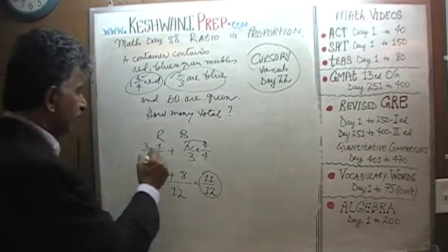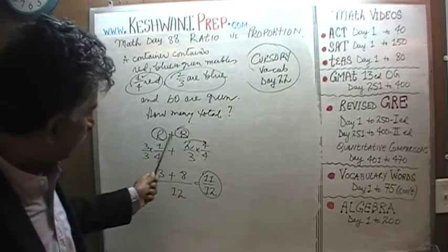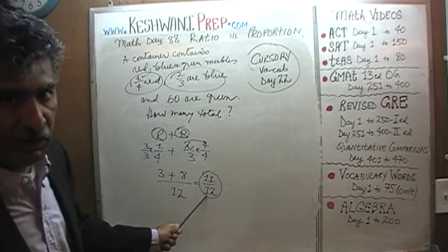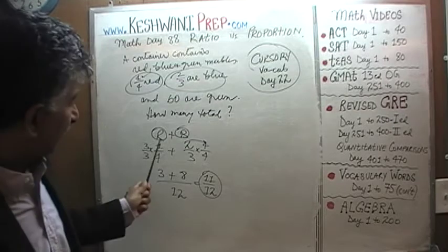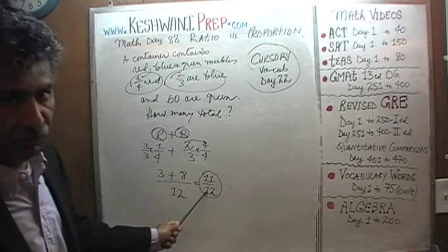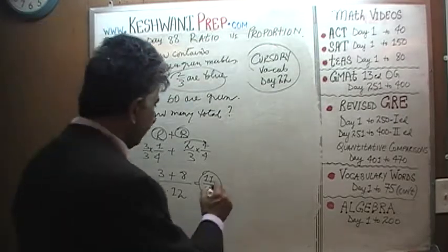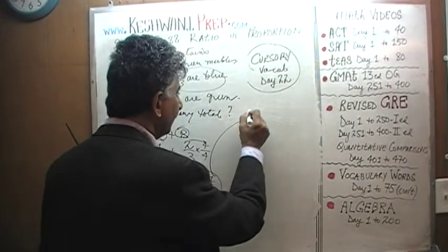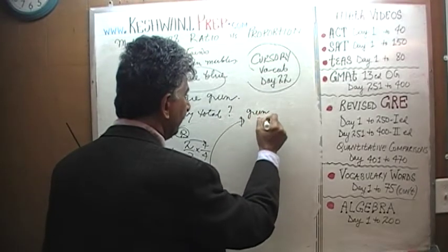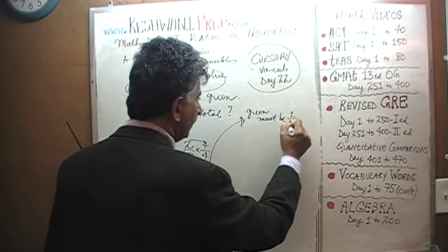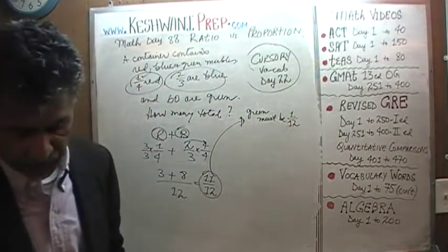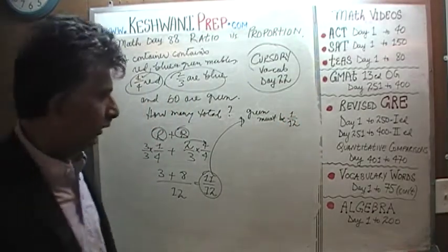Which means the red and the blue, red and the blue together constitute eleven-twelfth of the bag. The red and the blue constitute eleven-twelfth of the bag. That implies, that implies that green must be one-twelfth. Green must be one-twelfth of the total.